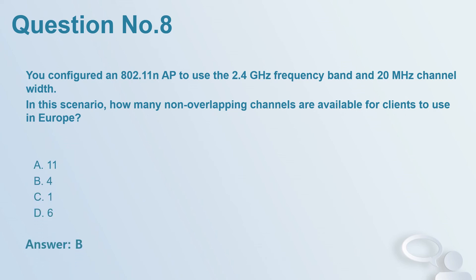Question number 8: You configured an 802.11 AP to use the 2.4 GHz frequency band and 20 MHz channel width. In this scenario, how many non-overlapping channels are available for clients to use in Europe? A. 11. B. 4. C. 1. D. 6. Answer: B.